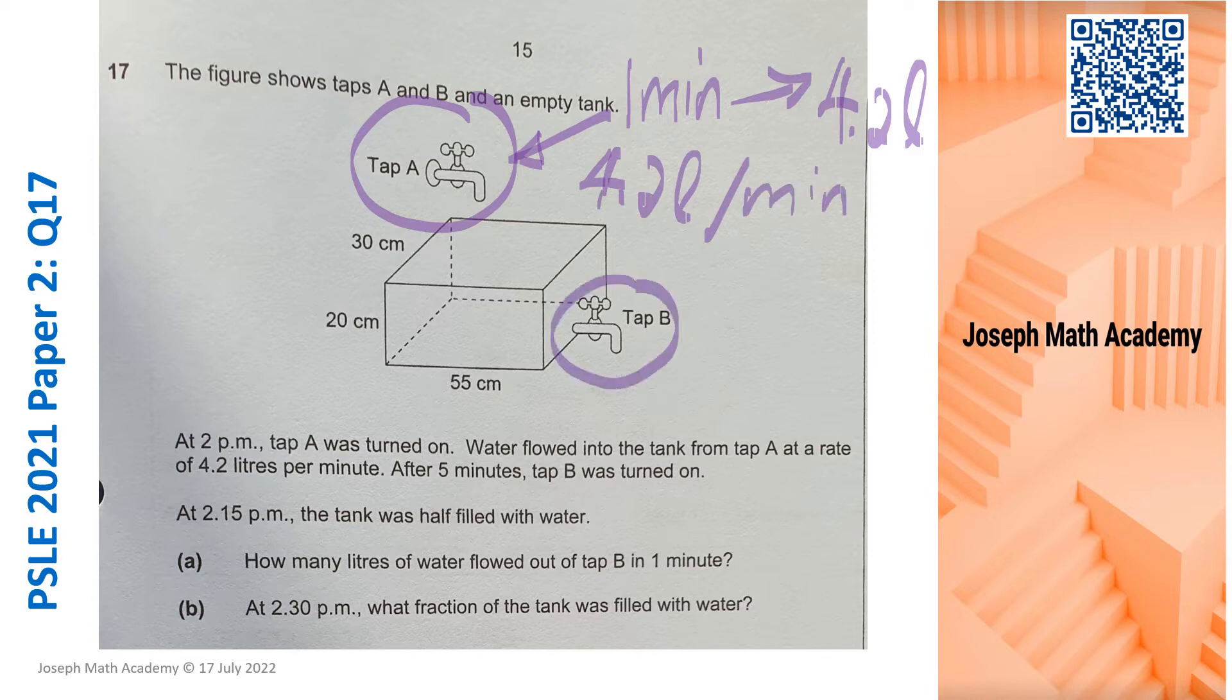What about tap B? For tap B, we have to find the rate. So finding the rate is part A. I'm going to move on to the new slide to show you how I go about solving this question.